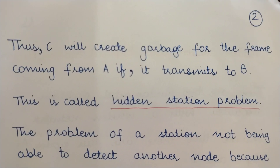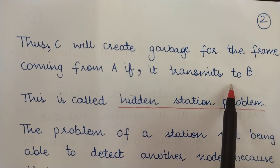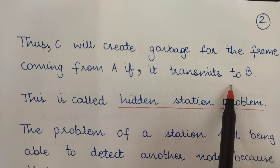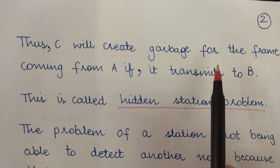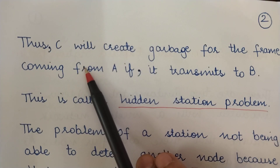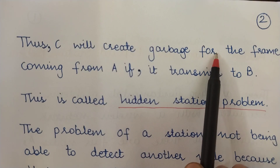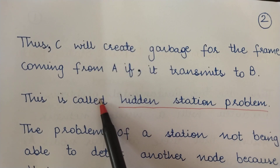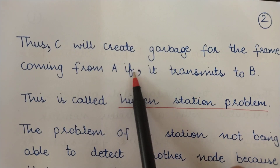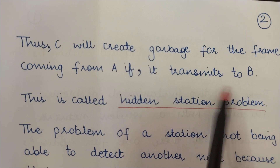If A is transmitting to B, and B is not transmitting — if B were transmitting, C could sense that transmission because B is in the radio range of C. But A is transmitting to B, and A is not in the transmission range of C, so C cannot sense or listen to that transmission. Now, C will create a collision for the frame coming from A if it also transmits to B. If two nodes transmit at the same time, the data will be garbled. C could not sense A's transmission towards B because A was not in its range, yet both A and C transmit to B at the same time, so the data will be garbled.